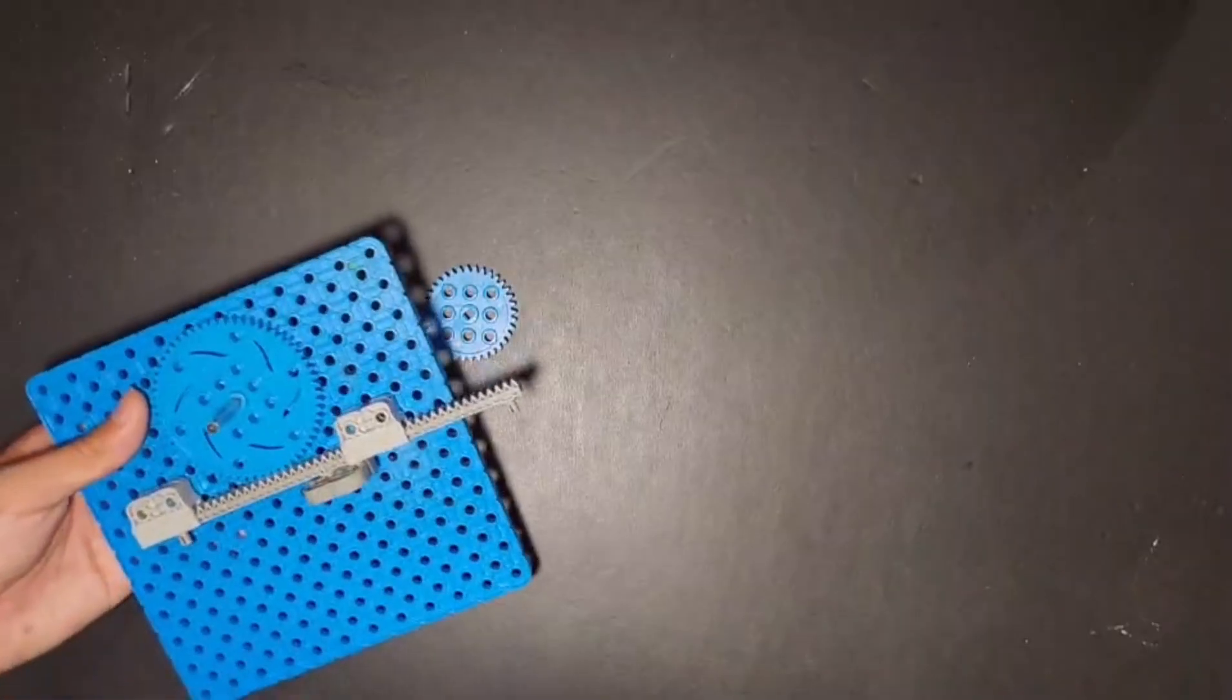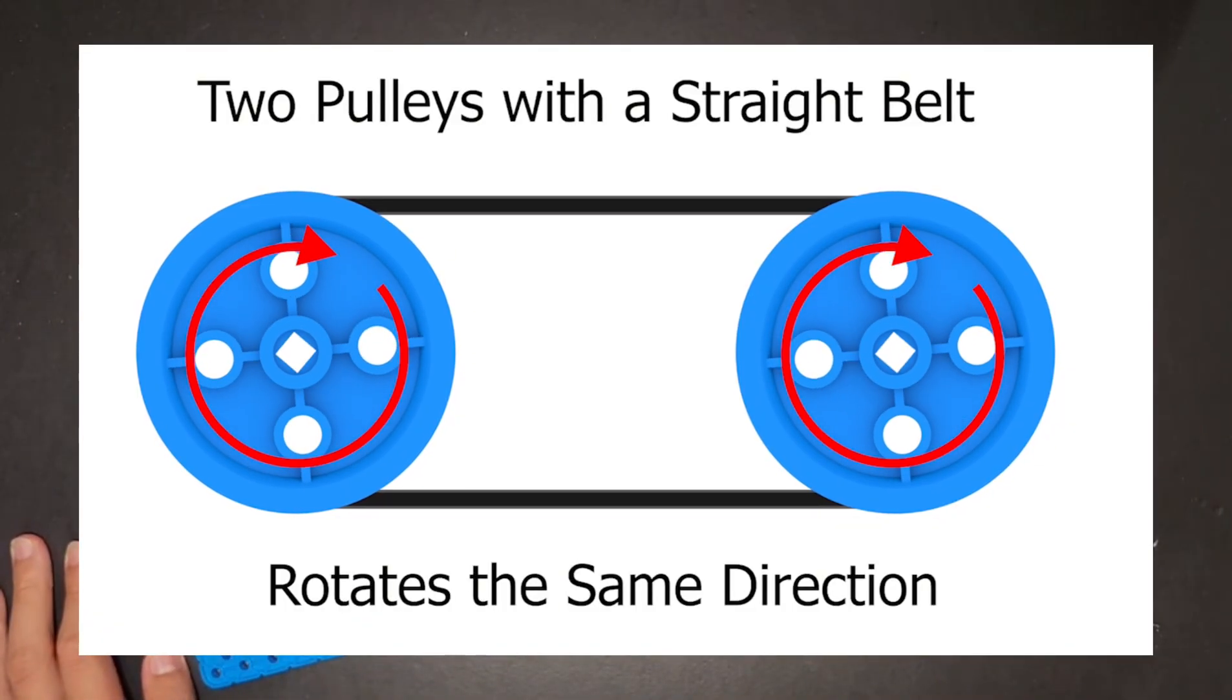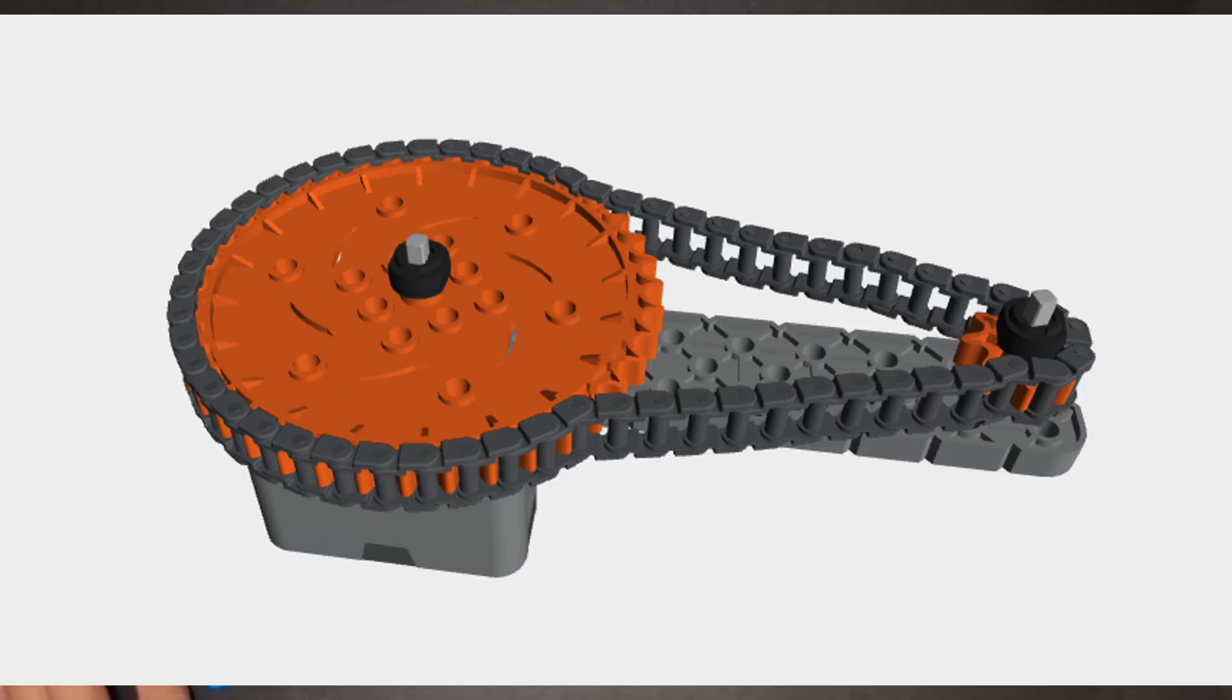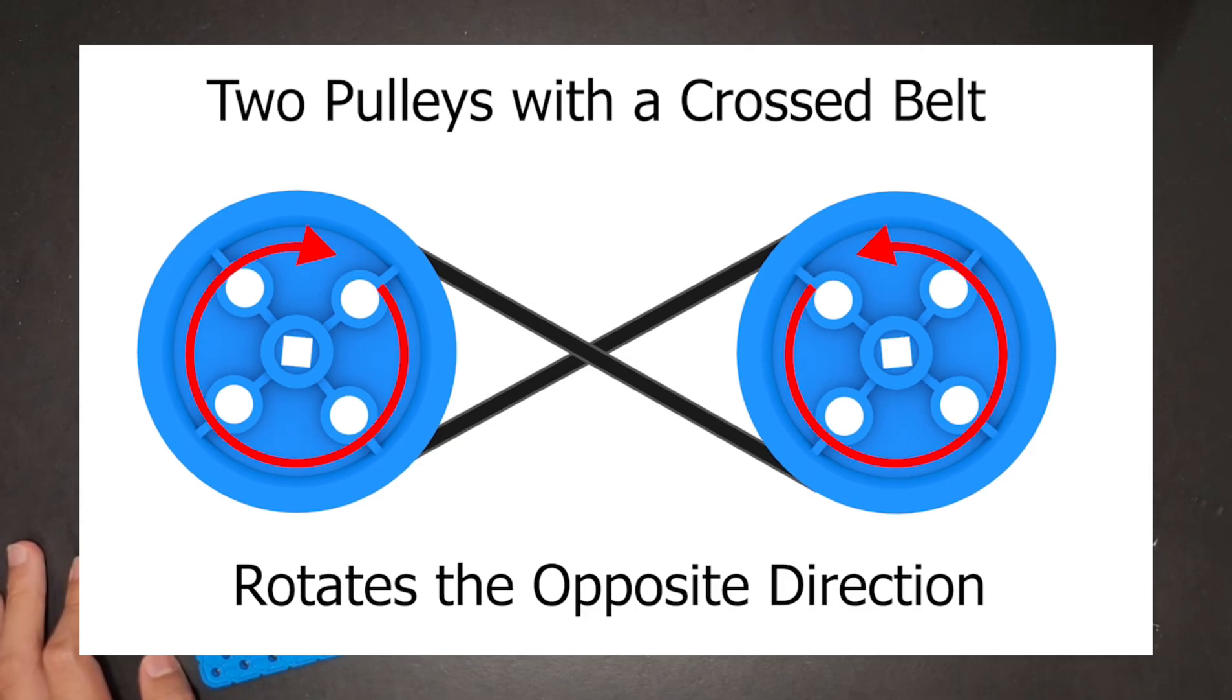Alright, so a mechanism that we didn't go over last time was a pulley mechanism. Pulley mechanism is basically the same as using chain and sprockets, except you're using string. And it's much better for pulling things upward.